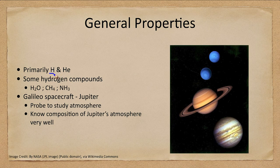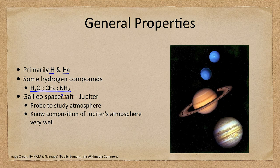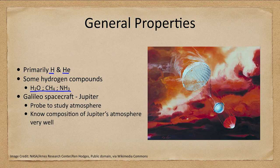The outer planets are made up primarily of hydrogen and helium, just like everything else in the universe. While we've concentrated on other materials in the inner solar system, most things like the Sun and the outer planets are also composed of hydrogen and helium, along with hydrogen compounds containing oxygen, carbon, and nitrogen. The Galileo spacecraft visited Jupiter and sent a probe into its atmosphere, giving us a good understanding of its composition at that location.